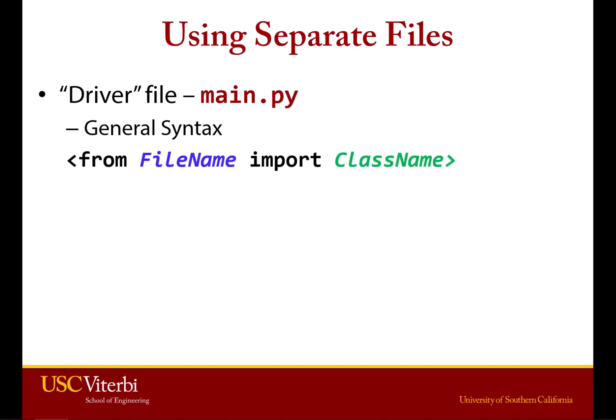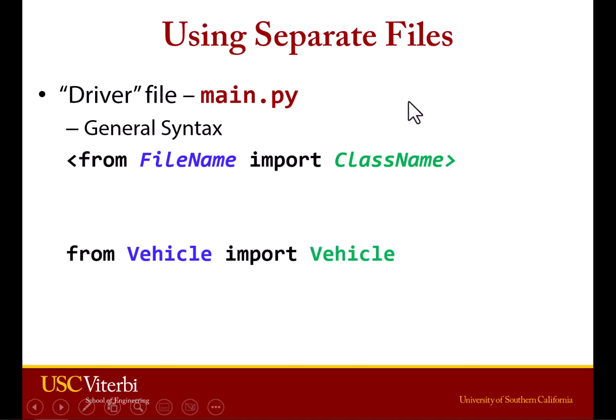The way we add the vehicle class to our main file is with the syntax: from file name, import class name. So in this case, it would be from vehicle, import vehicle.